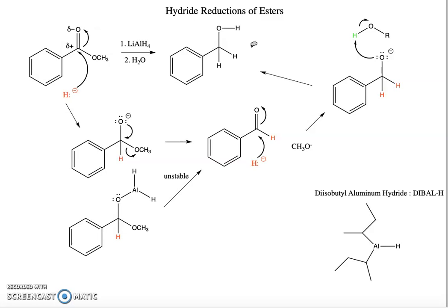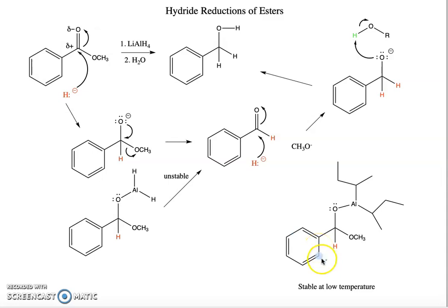On the other hand, if we look at the complex made by the diisobutyl aluminum hydride, it looks like this. And it's stable at low temperature. What this means is at low temperature, it never breaks down to the aldehyde. This reaction going from this complex to the aldehyde never happens.